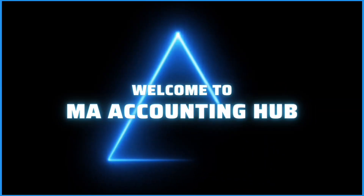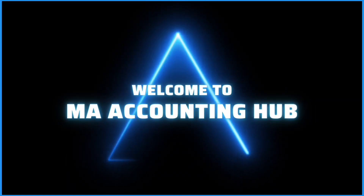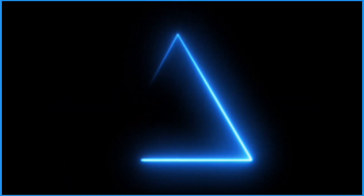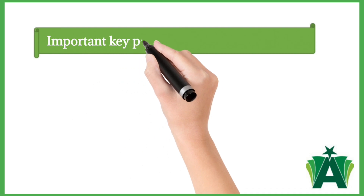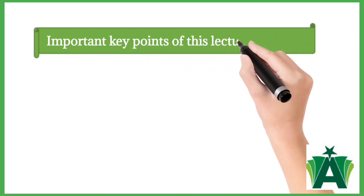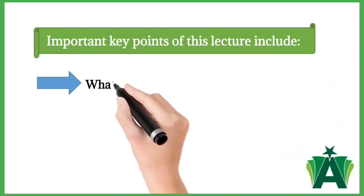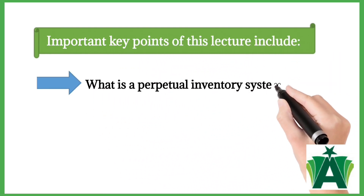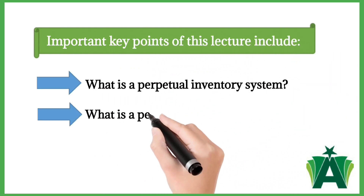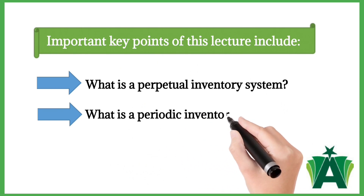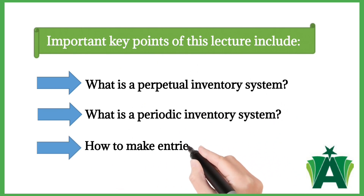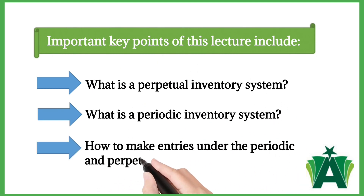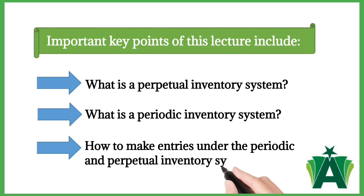Hi viewers, you are watching Millennium Academy Accounting Hub. Important key points of this lecture include: What is a perpetual inventory system? What is a periodic inventory system? How to make entries under the periodic and perpetual inventory system?